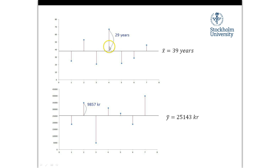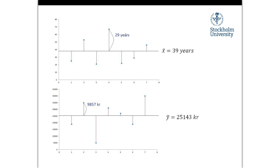These distances are described in terms of the same scales on the y-axis. This observation's distance to the mean is 29 years — described in years. Meanwhile this observation's distance is 9,857 kronor — described in kronor. So they are at very different scales. This isn't good enough if you want to use them in the same formulas, because we'll get results that vary depending on the scale of our variables, and we don't want that since we're comparing different variables at different scales all the time.